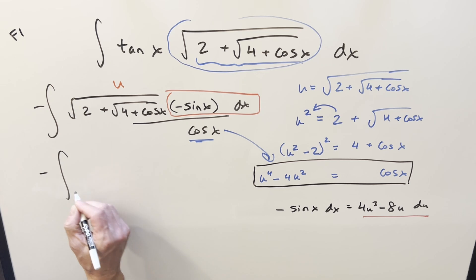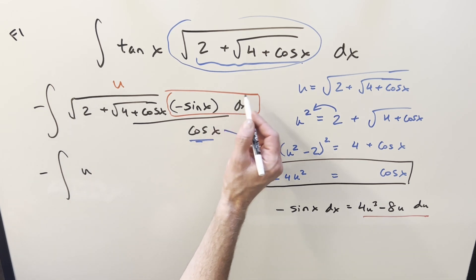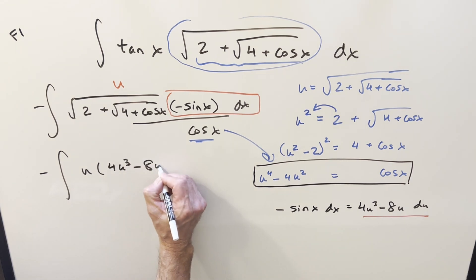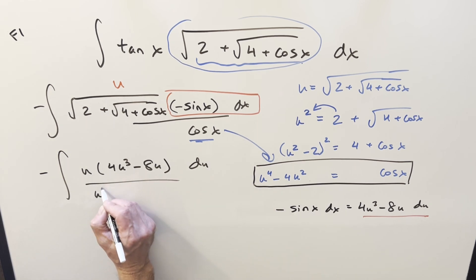So I'll go ahead and substitute. We have a minus sign in front, it's going to become u. Then we have u times 4u cubed minus 8u du. And cosine x is this, so we end up with u to the fourth minus 4u squared.